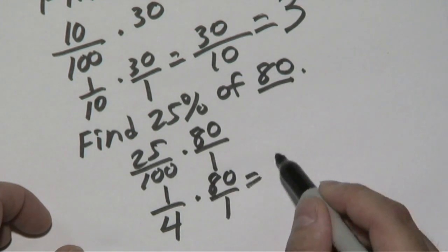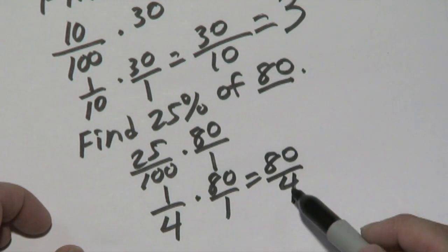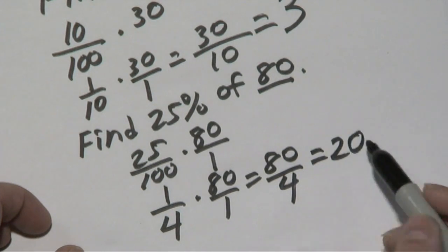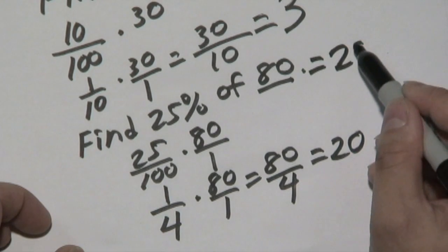1 times 80 is 80, and 4 times 1 is 4. 80 divided by 4 is 20. So what that means here is 25% of 80 is going to give you the grand total of 20.